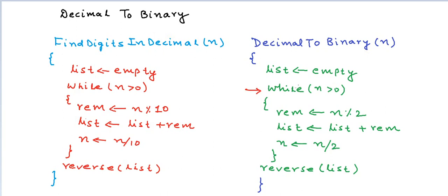This also gives us a generic algorithm to find a number in any base b. If you want to convert a number from decimal to base b, all you have to do is instead of taking a modulo by 2 and a division by 2, divide by b and take a modulo by b. This will give us the number in any base b. Thanks for watching.